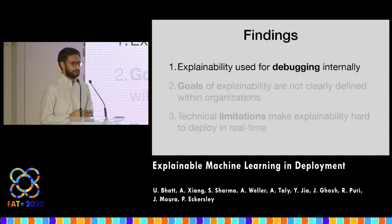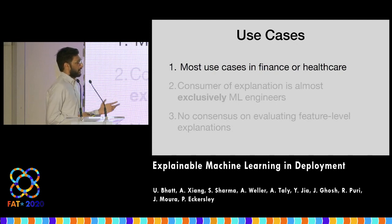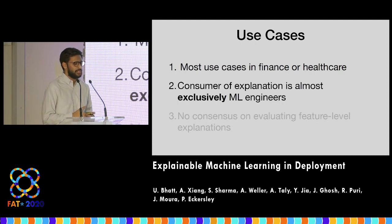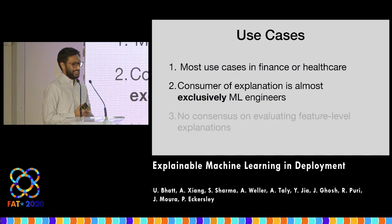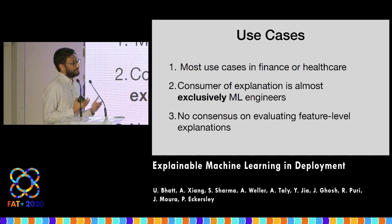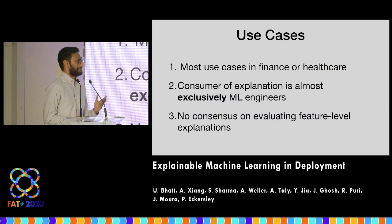Use cases we received were mostly in finance and healthcare, though this doesn't mean they were actually deployed — these were pilots, not necessarily being shown to doctors or loan analysts. The primary consumer of the explanation technique was almost exclusively a machine learning engineer; it was never seeing the light of day for an end user. Even 'why am I seeing this' features in recommendation systems were not actually using any algorithms our community has developed. There's also no consensus on how to evaluate feature importance explanations or measure fidelity and sensitivity for end users.